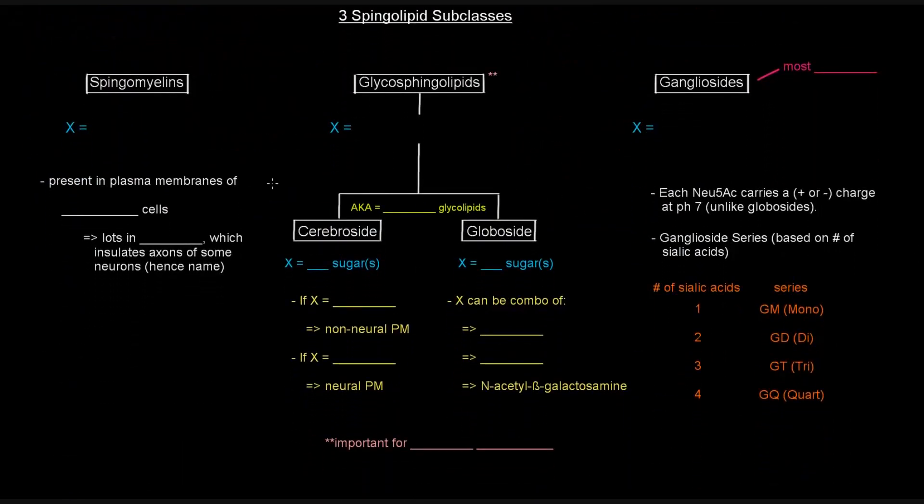They are categorized based on what's attached as the polar head group. We've got sphingomyelins, glycosphingolipids, and gangliosides. If your X is a phosphocholine or a phosphoethanolamine, you have a sphingomyelin. And sphingomyelins are present in the plasma membranes of animal cells.